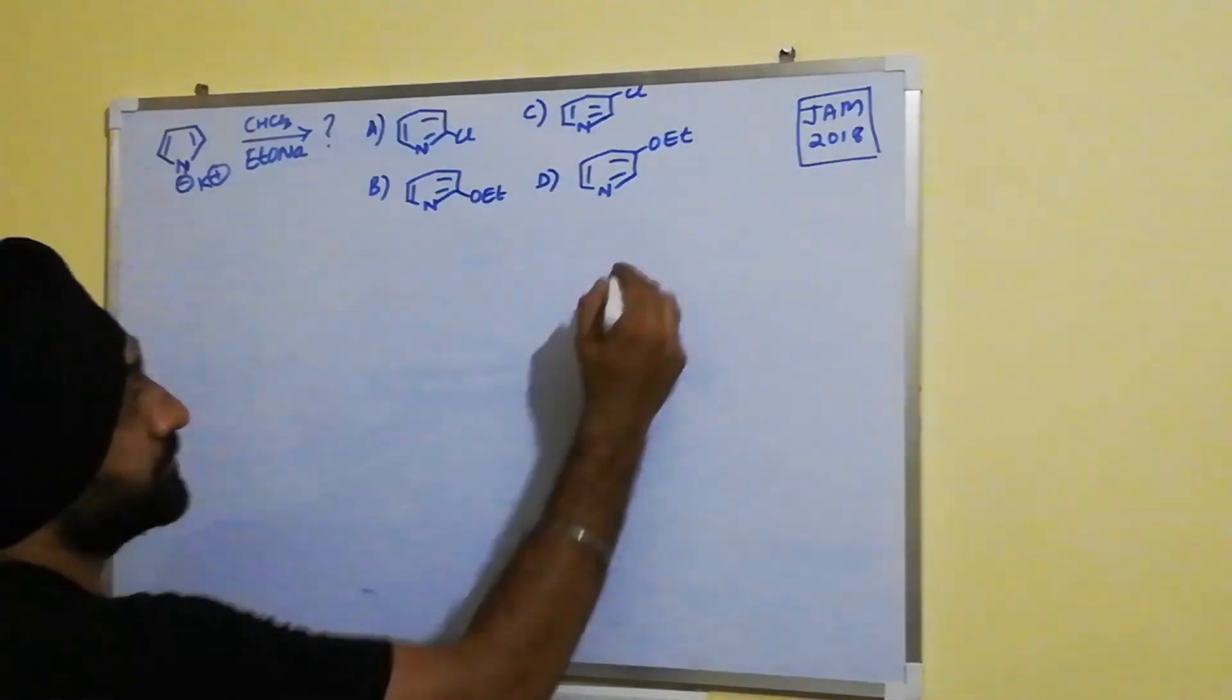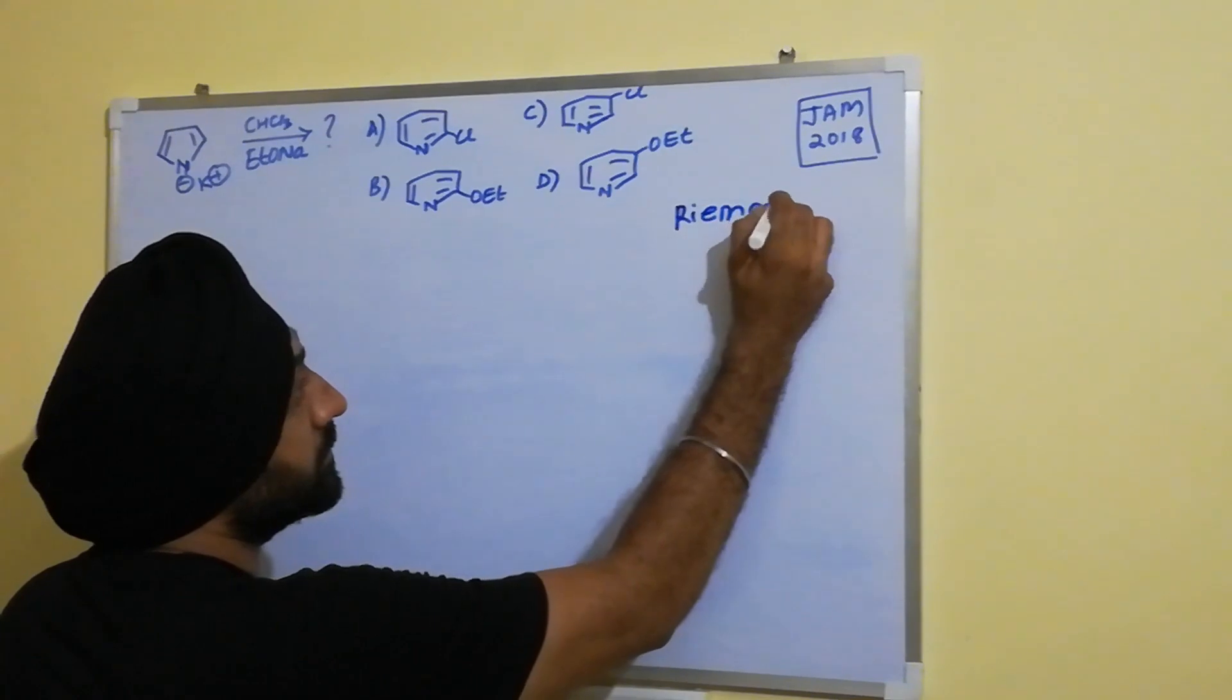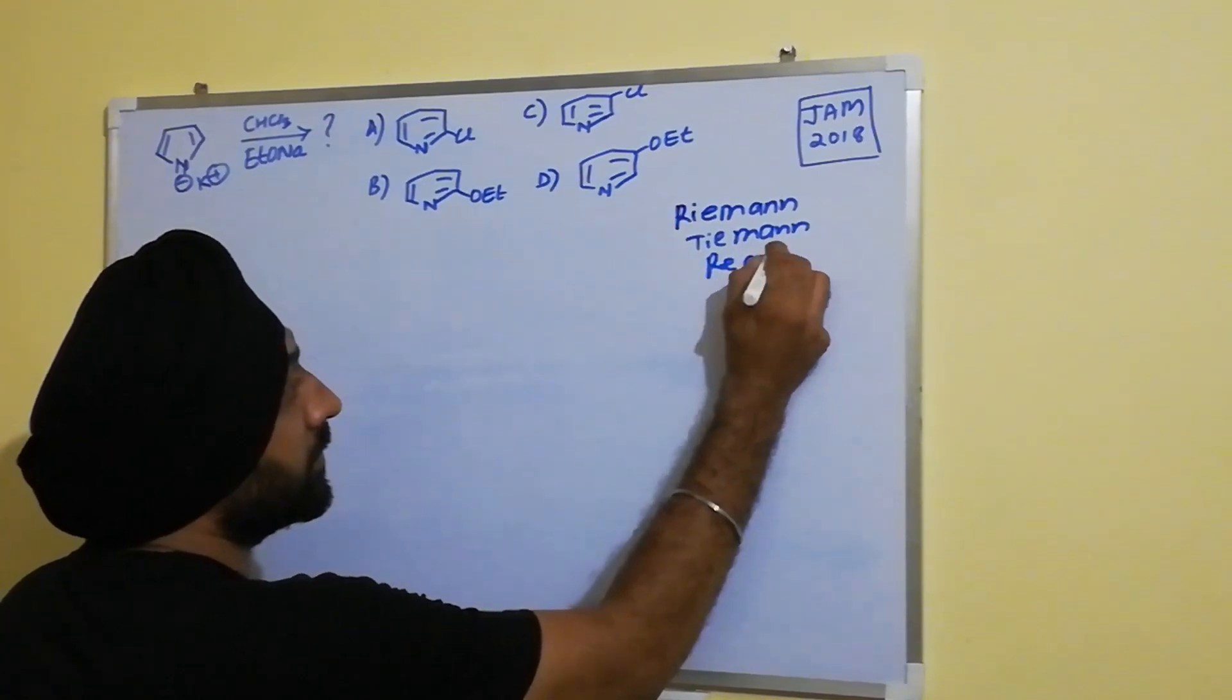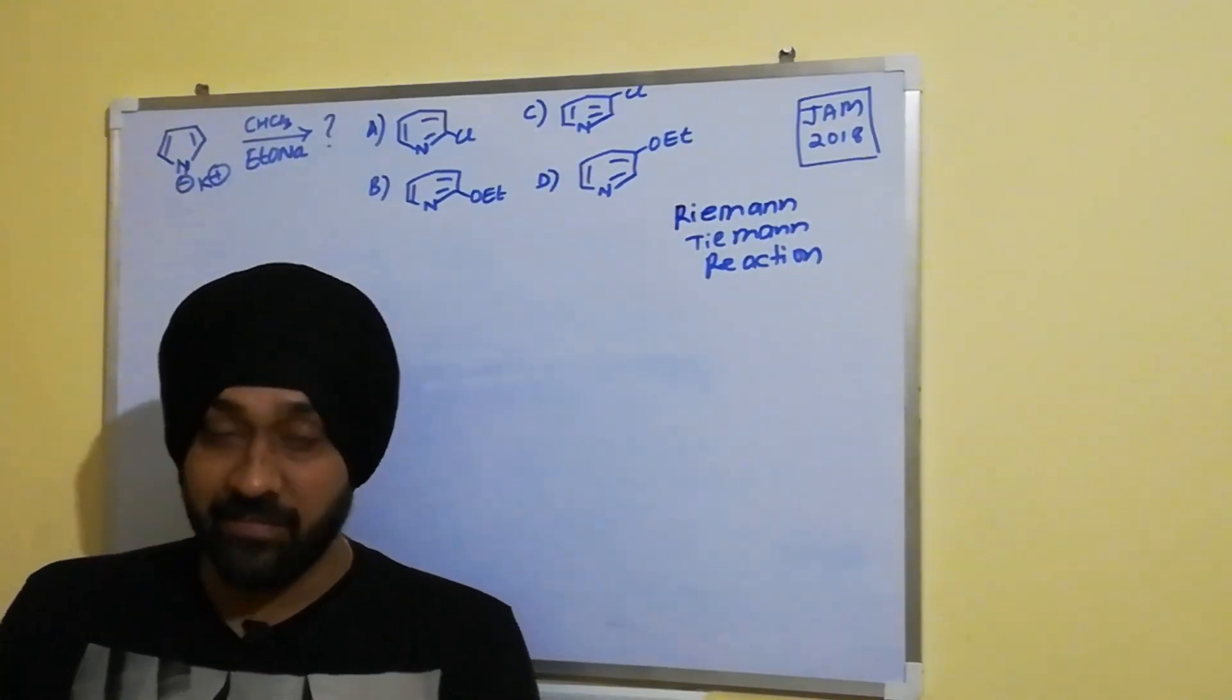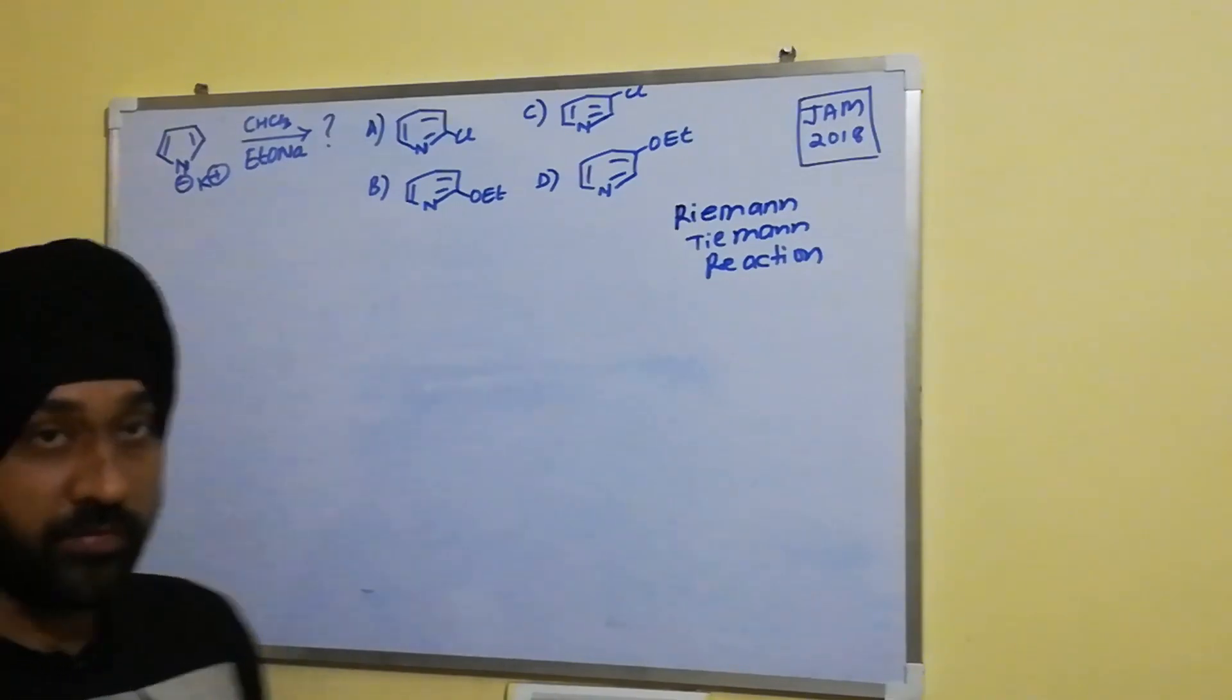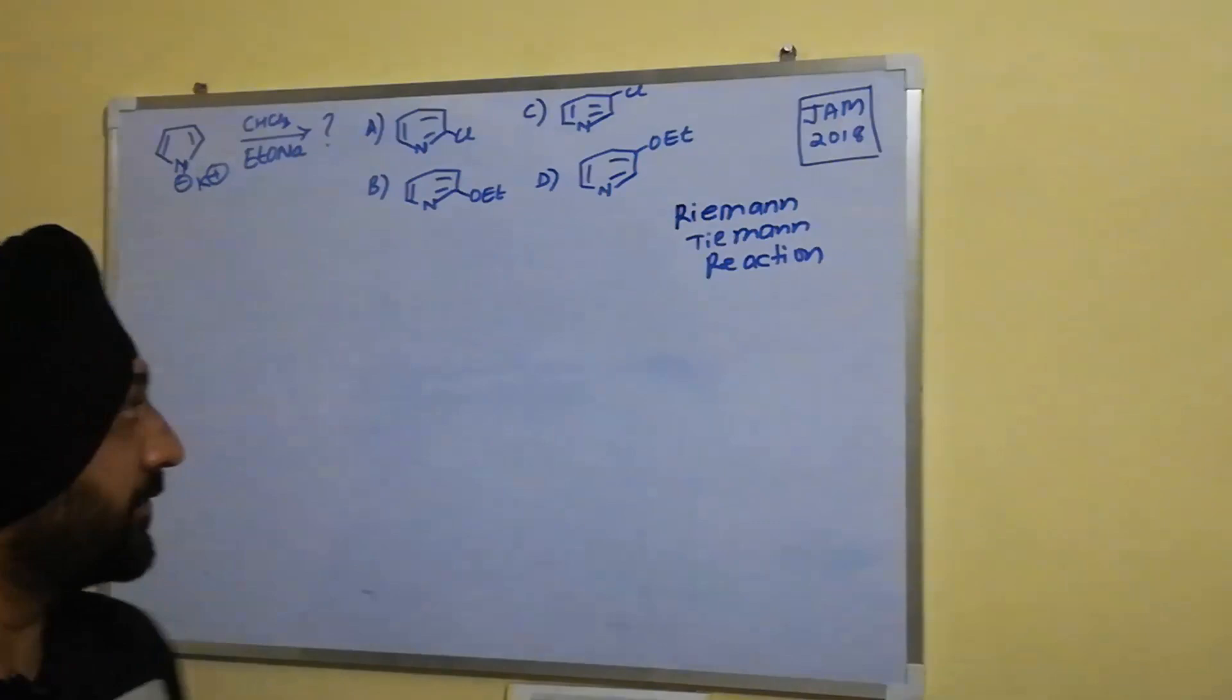then we can easily understand that whenever we have a base and chloroform, whenever there is chloroform and a base involved in a reaction, it leads to the formation of carbene as an intermediate.